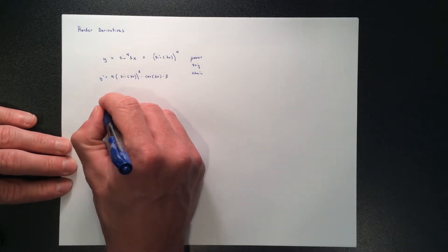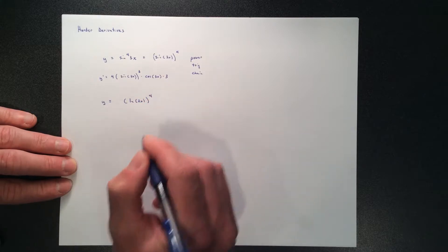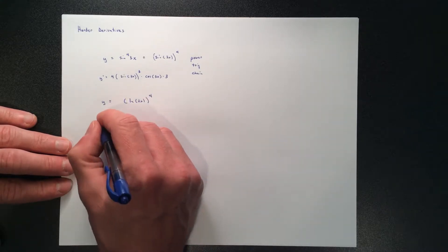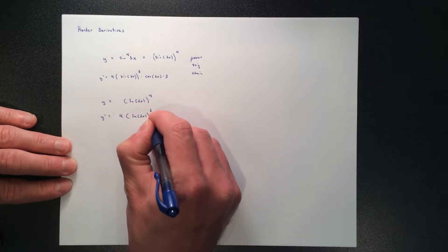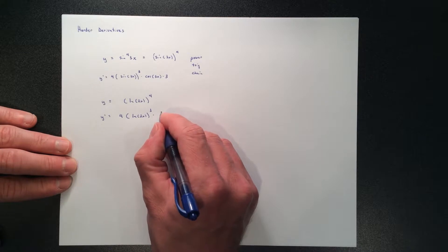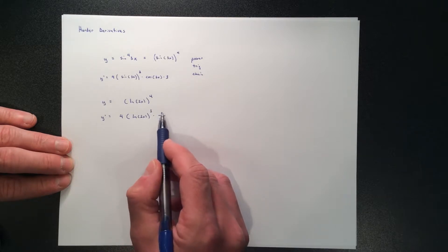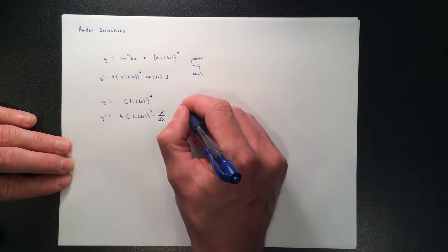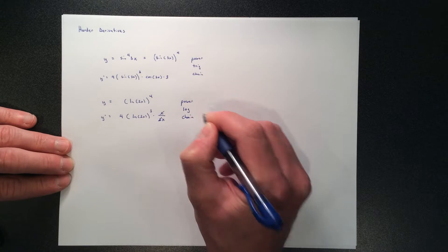We can do the same thing with the natural log of 2x, all to the 4th — remember, this is the natural log of 2x, all to the fourth, not 2x to the fourth. The power rule says bring the power down, decrease the power by 1, times the derivative of the inside. The inside is a logarithm; the derivative of a logarithm is u prime over u, so we get 2 over 2x. That's 1 over u times u prime, where u prime is 2 — you can cancel the 2s to simplify. This is really power rule combined with a log rule.